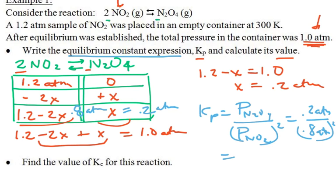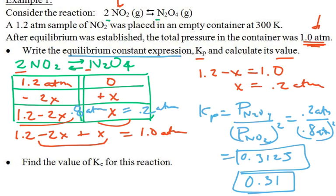So that is going to be 0.2 atmospheres over 0.8 atmospheres squared. For that I get a value of 0.3125, and if somebody asks for the units, it would be atmospheres to the minus 1, but we usually don't ask for the units. So 0.3125, we're only working two significant figures, so we might want to call that 0.31.